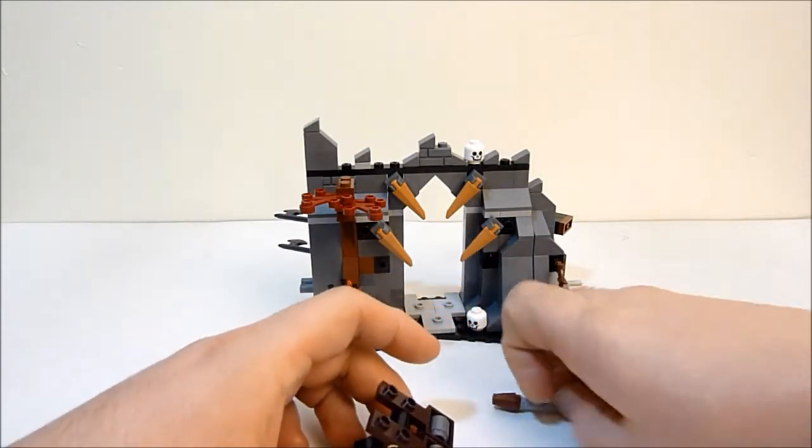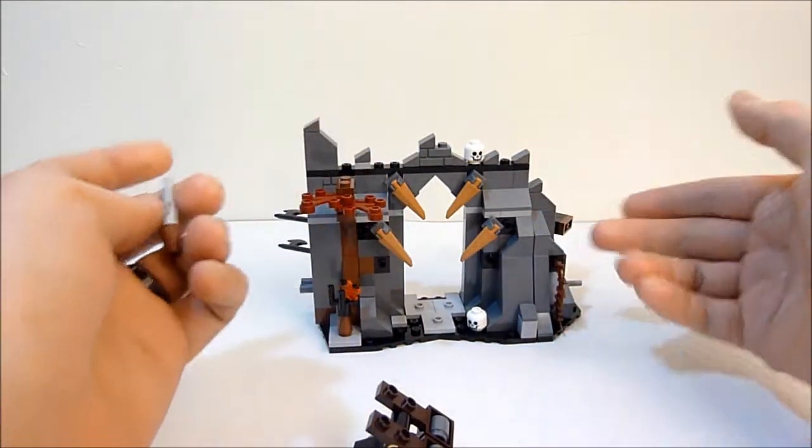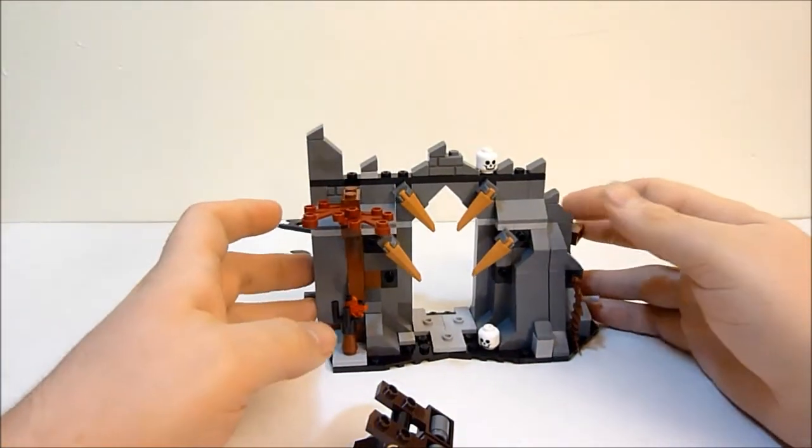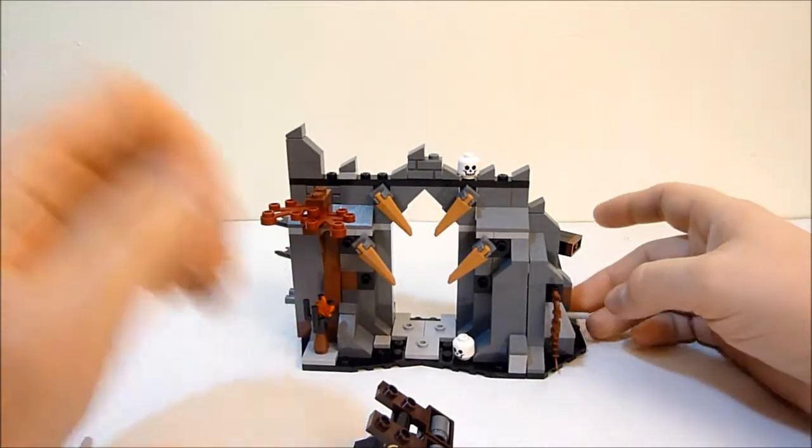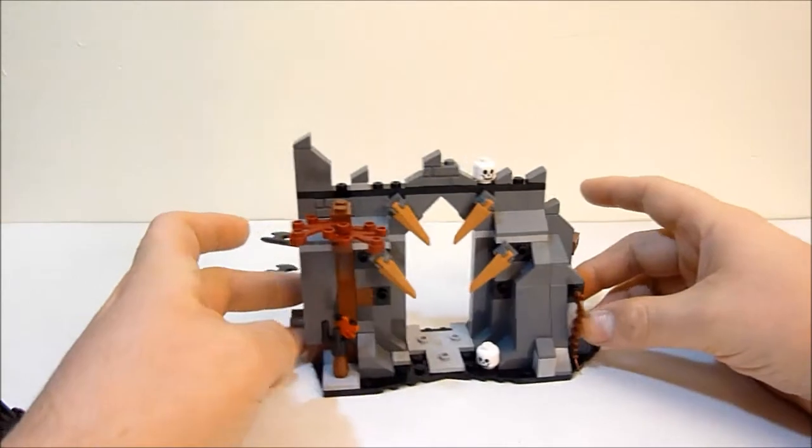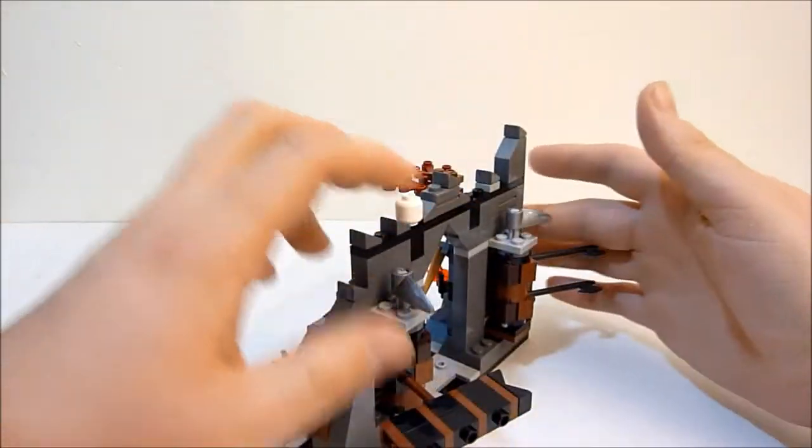You also get an extra flick fire missile for when you inevitably lose this one somewhere in the cosmos. But the set itself is, like I said, very simple. Not a whole heck of a lot going on here. It's basically just the front piece.